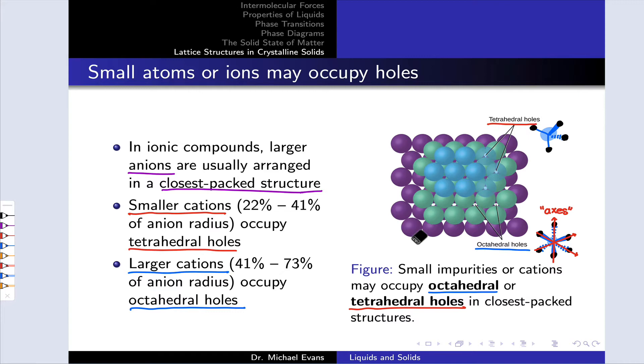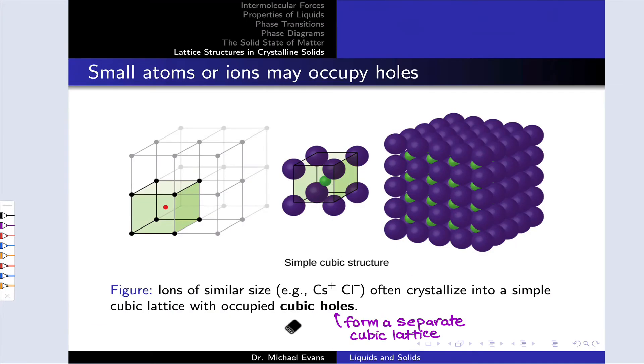They're relatively large, so larger cations can fit into those spaces. Ions that are of similar size, for example cesium chloride, where the Cs+ cation is on the same order of size as the Cl- anion.